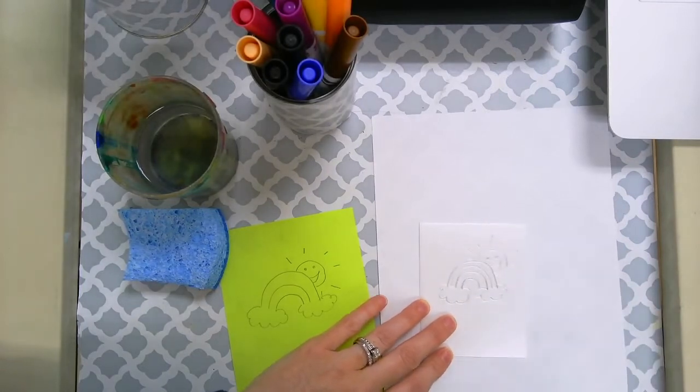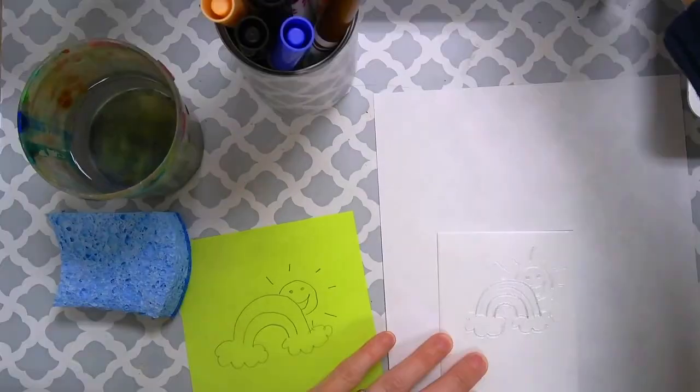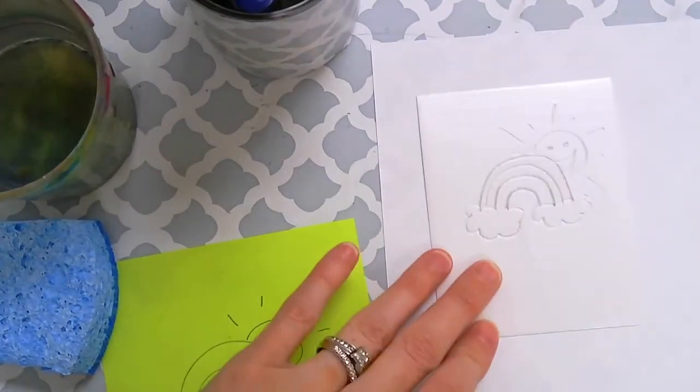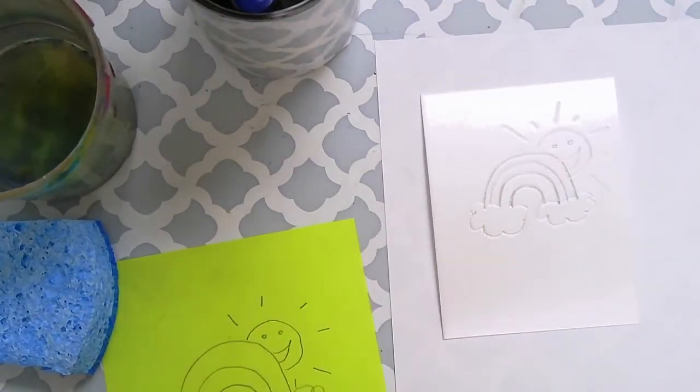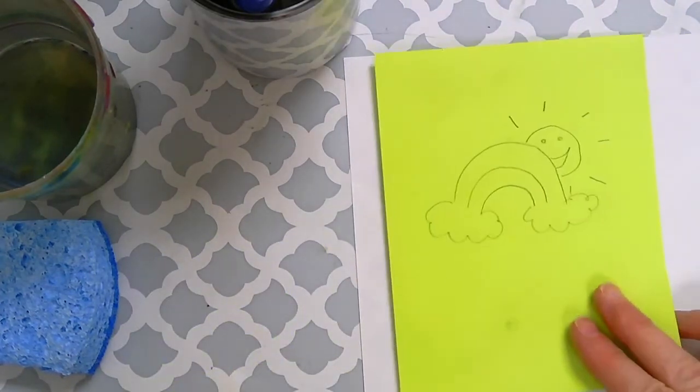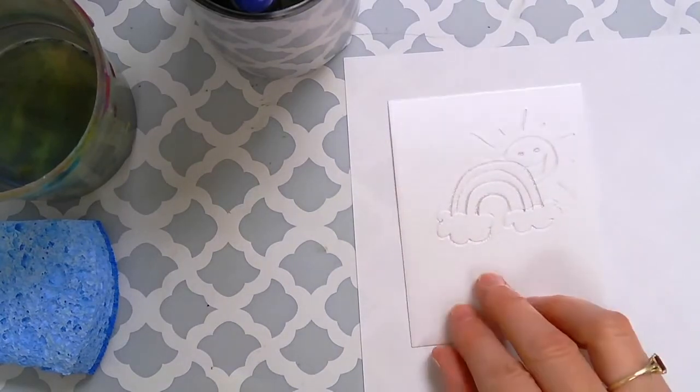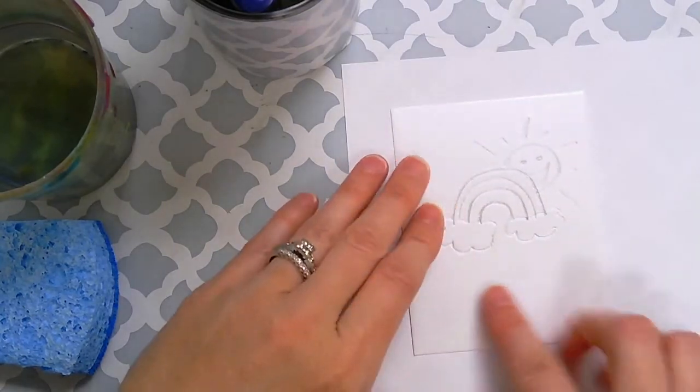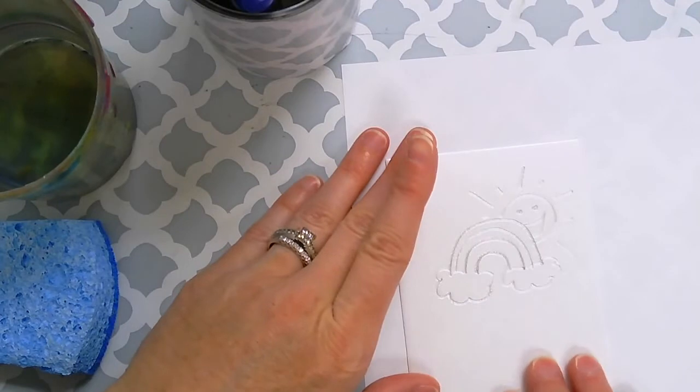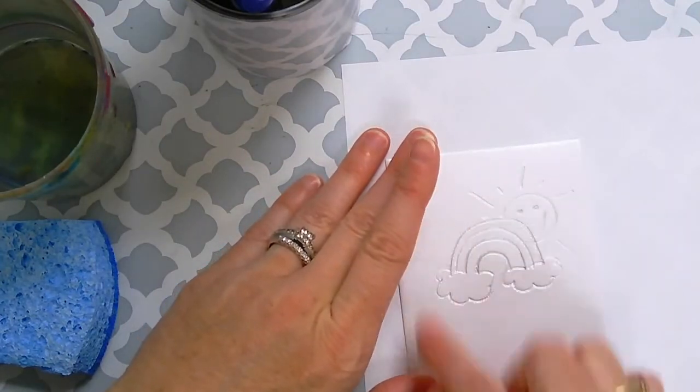There we go. Okay guys, so I hope you can kind of see it. It's a little bit difficult to see but you can tell that my little drawing that I drew on my sketch piece of paper to practice, that's what I drew right here. And you can use this whole area or you can just draw in a little section.